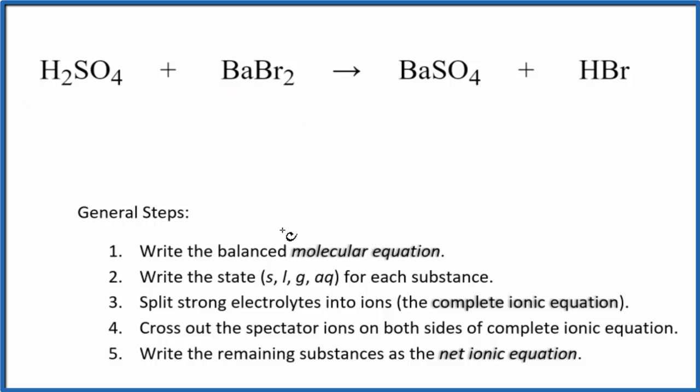The first thing we need to do when we write net ionic equations is balance the molecular equation. You can see I have two hydrogens here and just one here. I'll put a 2 in front of the HBr. Now the hydrogens are balanced.